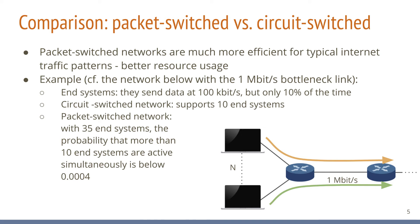The problem is that while the probability is low for more than 10 end systems to be active at the same time, it is not zero. So in all fairness, what can happen is that the network could experience congestion — a form of overload — which is not the case in a circuit switch network. How congestion is detected and dealt with on the internet will be the subject of later videos. It is also worth mentioning that there are technologies that implement circuit-like behavior over packet switch networks, though that is beyond the scope of this video series.